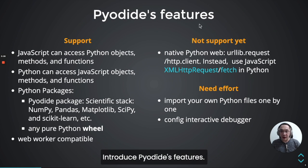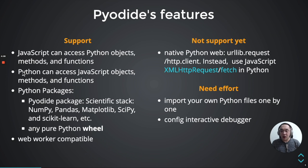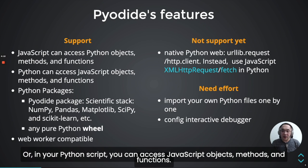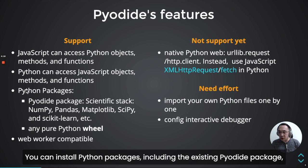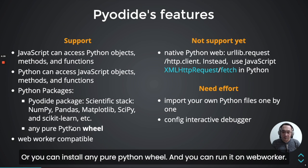Let's introduce PyDai features. In JavaScript, you can access Python objects, methods, and functions. Or in your Python code, you can access JavaScript objects, methods, and functions. You can install any Python package, including PyDai packages, scientific libraries such as NumPy, Pandas, OpenCV, SciPy, and scikit-learn. Totally there are 74 packages available until now. Or you can install any pure Python wheel package, and you can run it on a WebWorker.